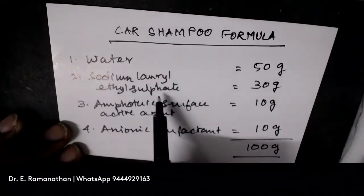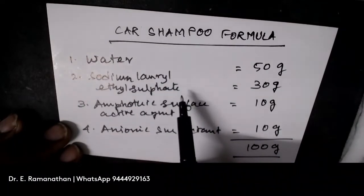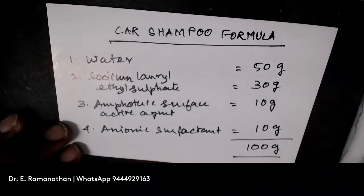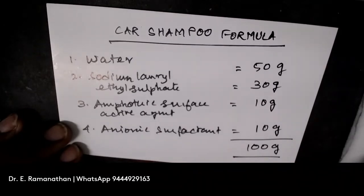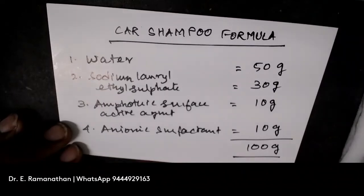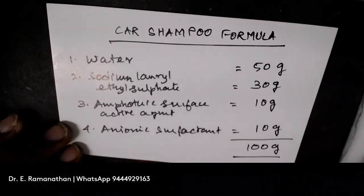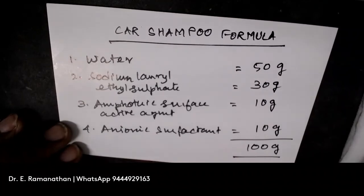Sodium Laurel Ethyl Sulphate is available under various commercial names. I can suggest STPAN, and similarly for the Amphoteric Surface Active Agent, one of the available options is Meranol. You can also include STPAN as the anionic surfactant — that is BioTurge, manufactured by STPAN and company.